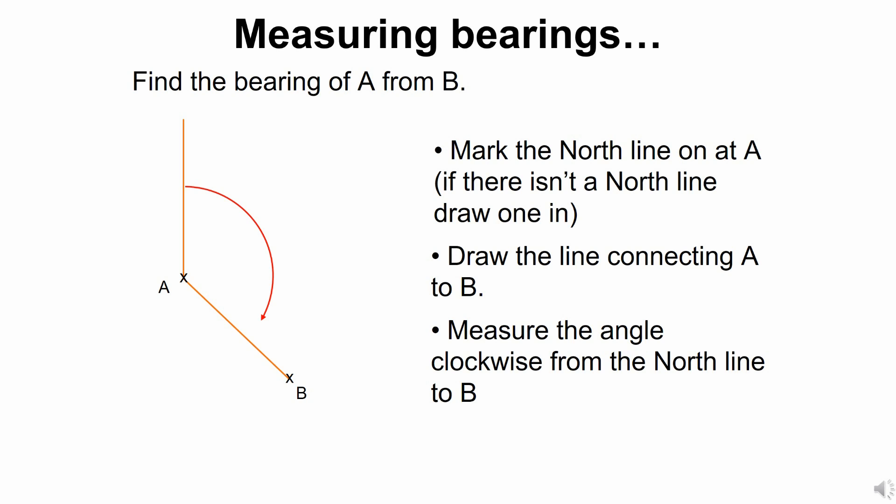So when it comes to measuring these bearings and you want to find the exact degrees, there is a certain procedure you need to follow. We are going on this diagram from point A to point B. The first thing you need to do is you need to draw a north line. The north line is a point leading from the point of origin, A in this case, directly north to 0 degrees.